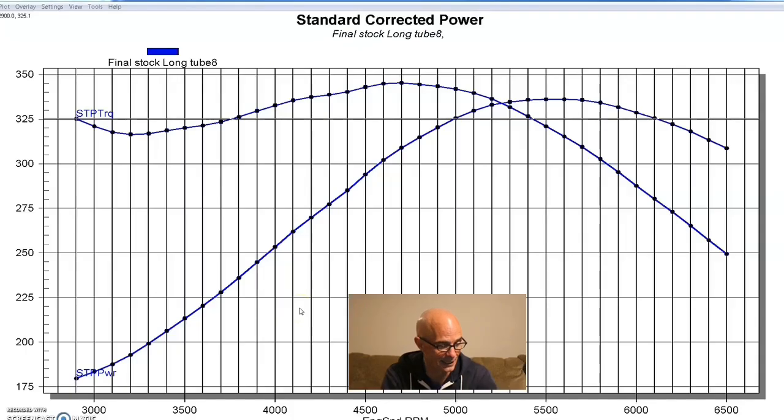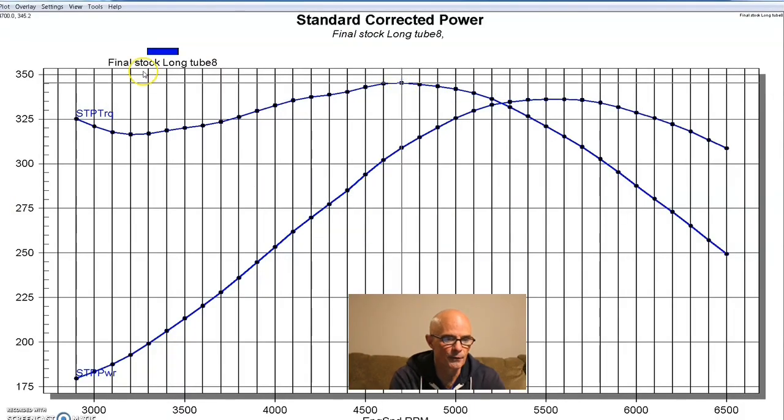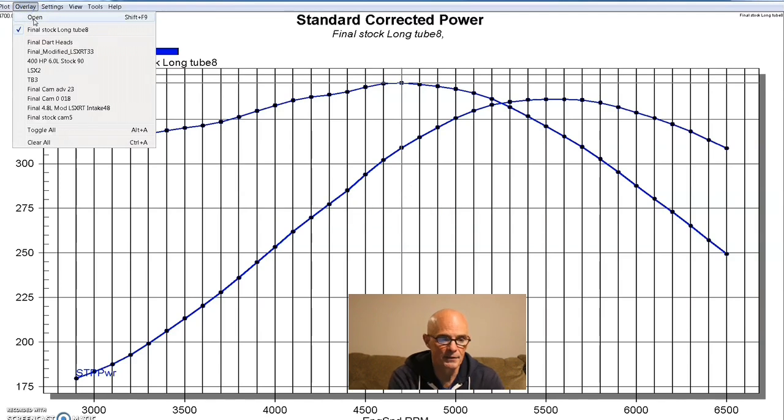We're going to get started on our 4.8 liter combinations. This one is the 500 horsepower motor. Actually, we did not make 500 horsepower from this particular combination, but we got close. This is our stock 4.8 liter, 336 horsepower, 345 foot-pounds of torque. And here's what happened after we made all the modifications.